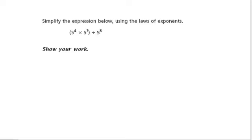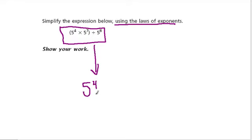This problem says to simplify the expression below using the laws of exponents. So I'm going to rewrite this into a fraction, so it's easier to see what's happening. 5 to the 4th times 5 to the 7th divided by 5 to the 8th.